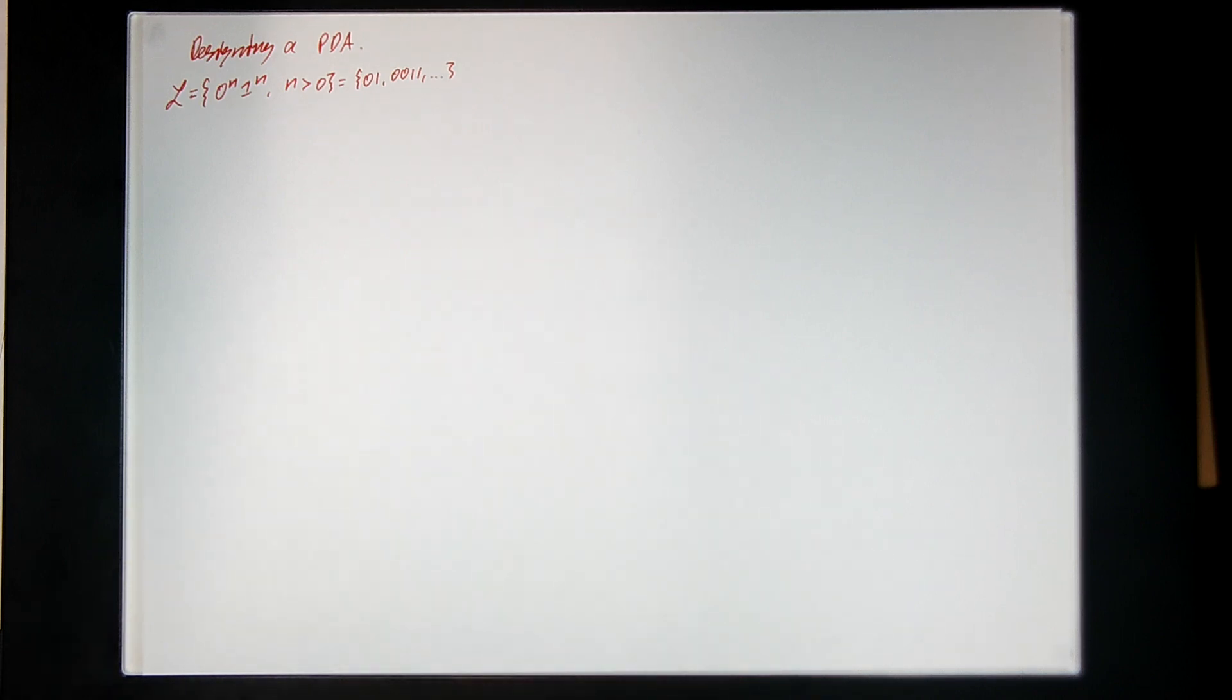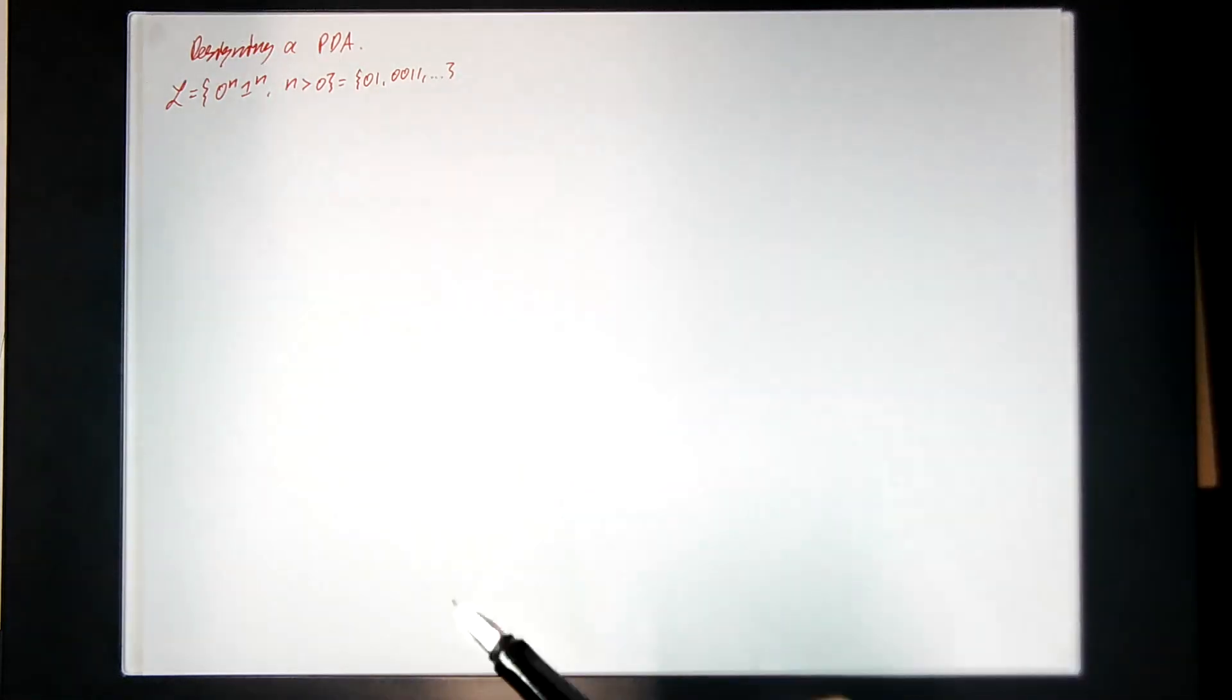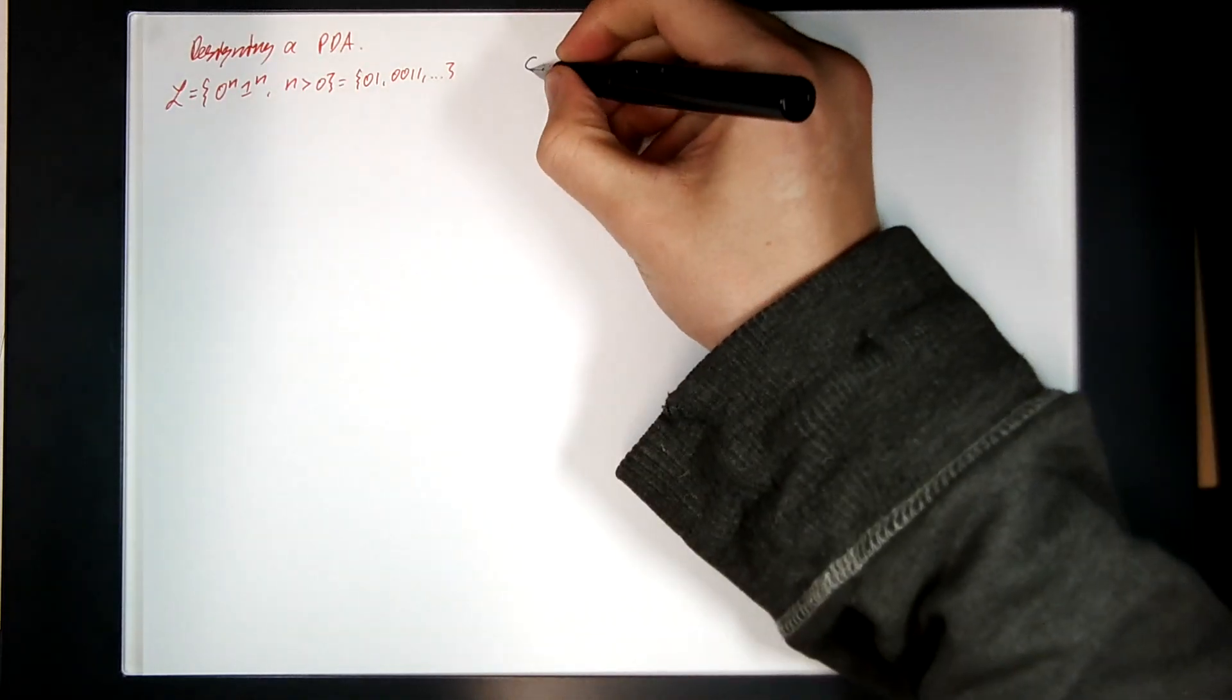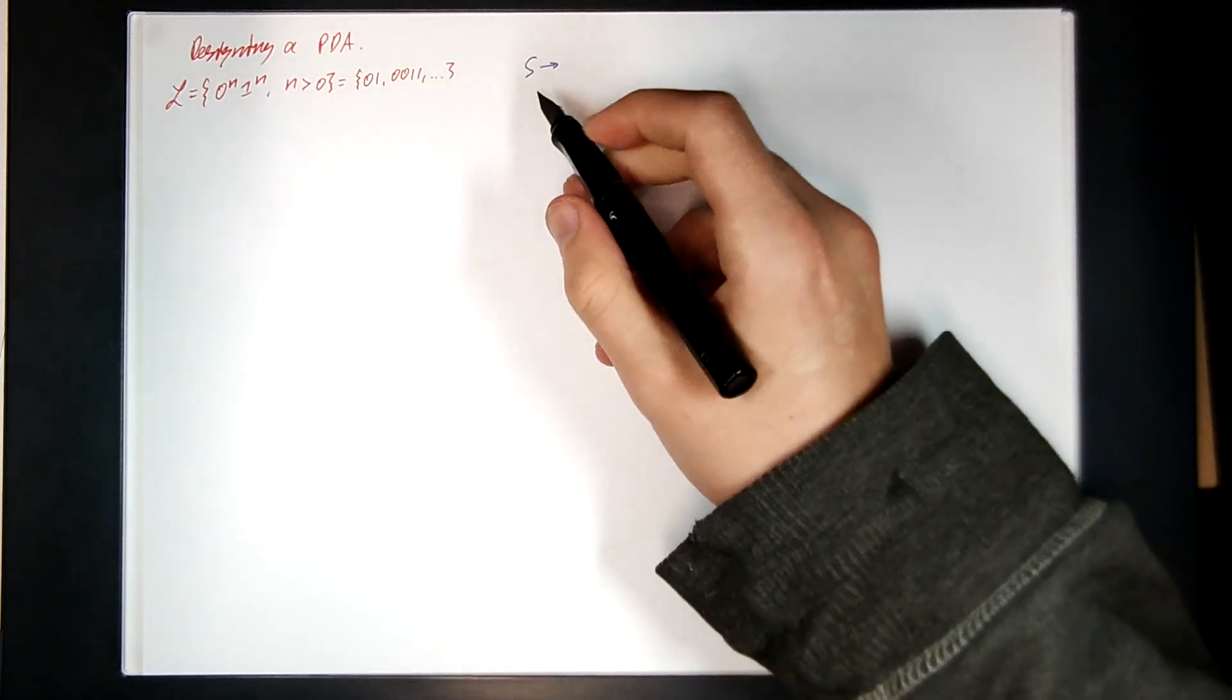Okay, so when building a PDA for a language, there's basically two main ways to do it. The first thing is to just explicitly construct the PDA from scratch. The other thing you can do is, given a language, you can construct a grammar that generates that language, a context-free grammar, importantly.